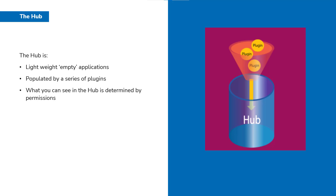Plugins often require an additional license key and permissions for access are granted by your hub administrator. Plugin examples, some of which you might be familiar with, are the Automation Lifecycle Management plugin, Interact, Decision, and the Control Room.